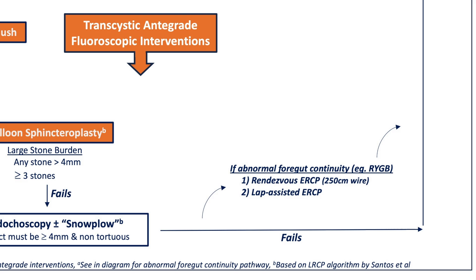In summary, the stone burden and anatomy will determine which intervention to do. Remember to always grab the wire and freeze the robotic arm when exchanging catheters so you don't lose wire access. After the sphincteroplasty, do a power flush and you may need to do a snowplow maneuver to get the stones out, but this should be easier with the sphincter now dilated. If there is abnormal foregut anatomy, make an effort to coordinate with your endoscopist for either a rendezvous or lap-assisted ERCP. As a final note, an alternative to assess for duct clearance is an intraoperative ultrasound, which will require a 10 mm or bigger port. Thank you for watching, and if looking for more acute care robotic surgery videos, please subscribe to my channel.